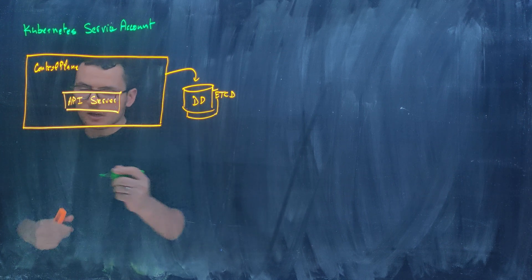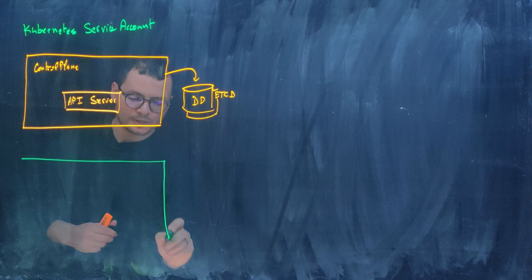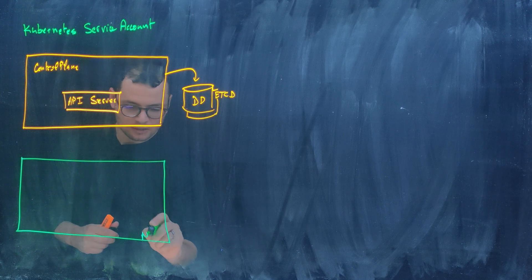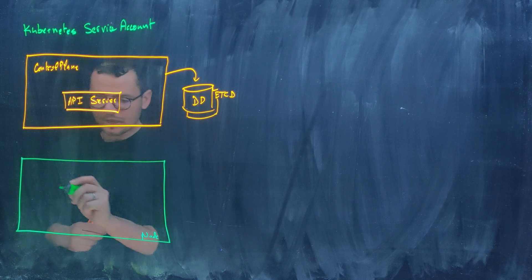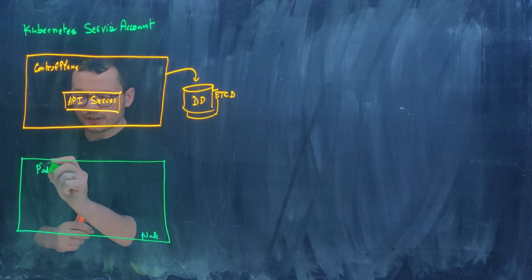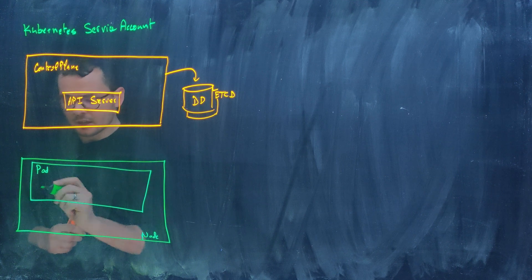And then if I have pods in my cluster, of course I would have some nodes in my cluster. Let's say this is one node. And inside that node, I might have one or multiple pods running. So let's say I have a pod running inside that node.